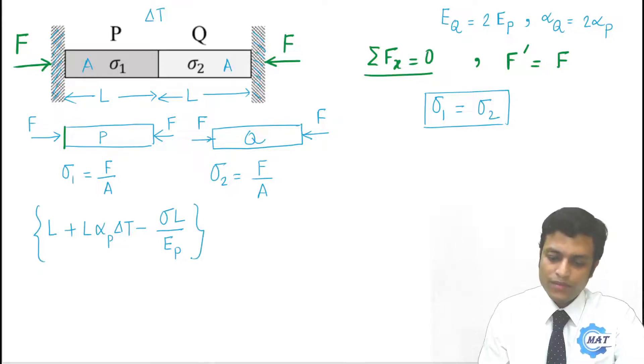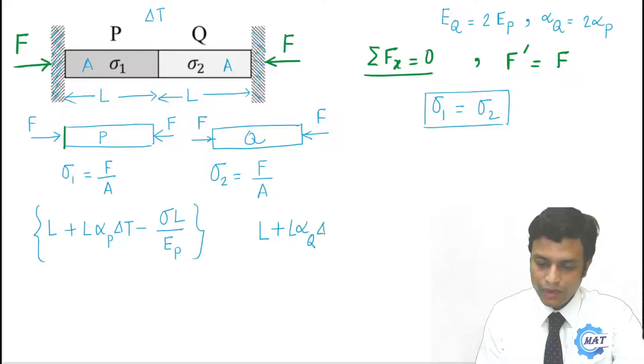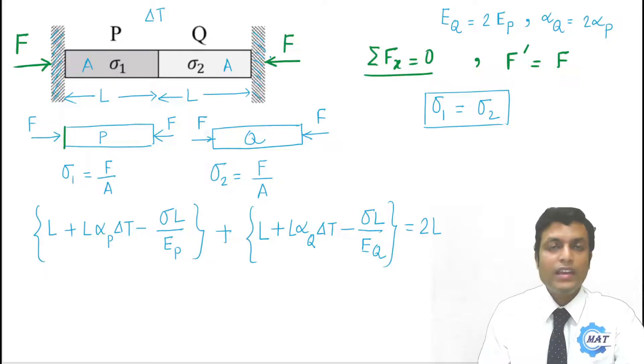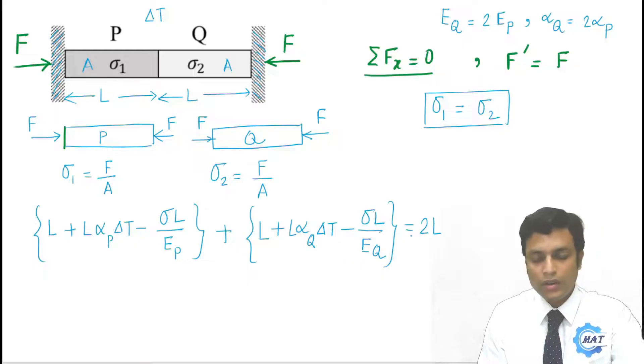What will be the final length of bar Q? Final length of bar Q will be L, that was the initial length, elongation due to temperature rise L alphaQ delta T, and reduction due to compressive stress sigma L by EQ. Now the boundary condition is that their final length will be also 2L, because these two rigid supports do not allow P and Q to elongate. So their final length will be also equal to 2L.